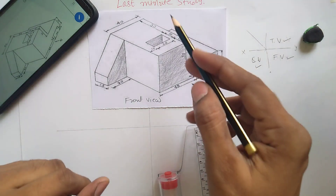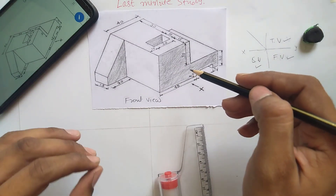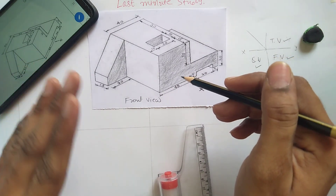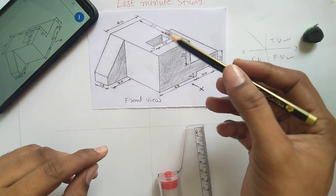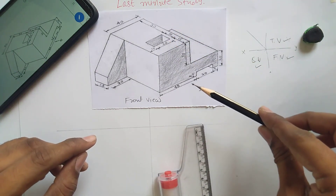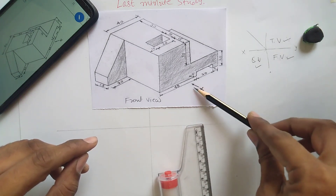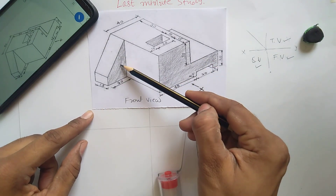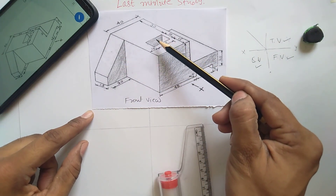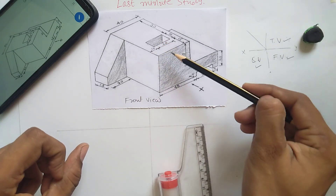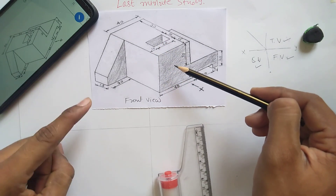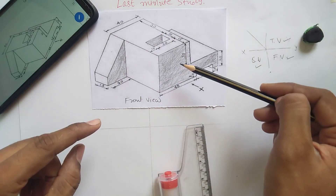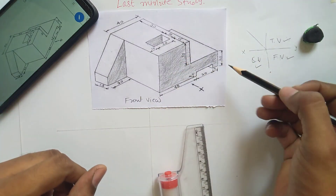Now let's start with the front view. This is our solid body. Whenever you solve any problem related to orthographic projection, you have to imagine the surfaces which you visualize from that particular direction. Let's say this is your direction of observing, which is given - that is X form. So you see this surface which is highlighted, and this surface also. Though this surface cannot be visible due to overlapping, it is there so you have to mention it in your front view.